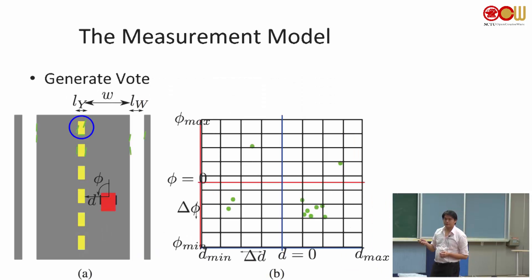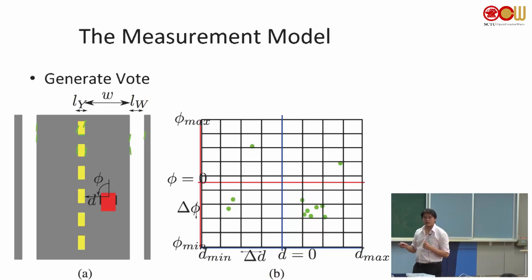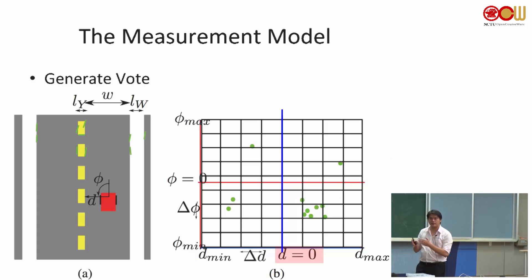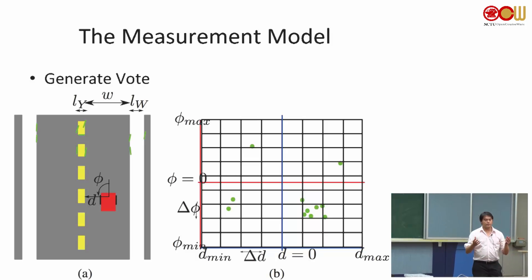For each line segment, we want to generate a vote on the right-hand side, and we kind of do the Hough transform again. So for each segment, we want to convert the line segment to the lateral distance d and the angle phi, so that we can put a vote in this array. And you can see that d is equal to zero, that means that's the center. And this is the phi is zero, and we can also define a minimum and a maximum value. So that's the basic idea. We detect the line segments, and next, we want to figure out what's the vote of those line segments to this d and phi coordinate.